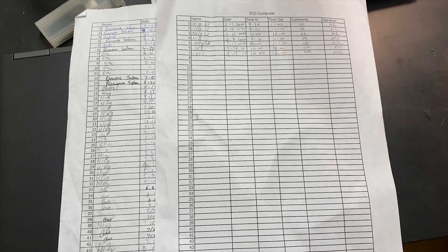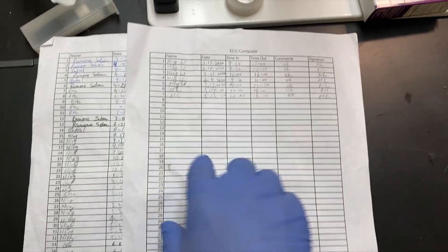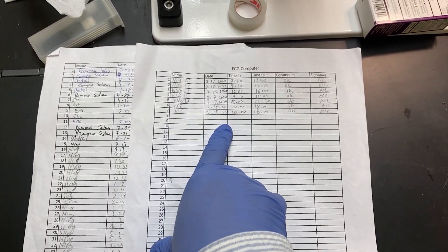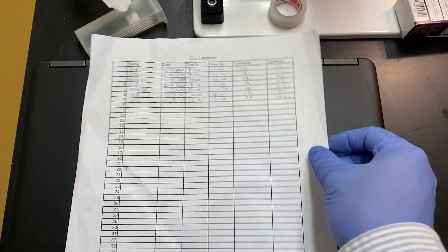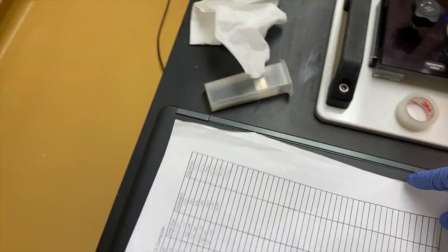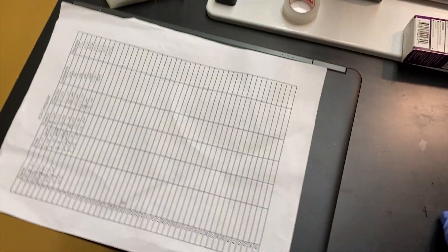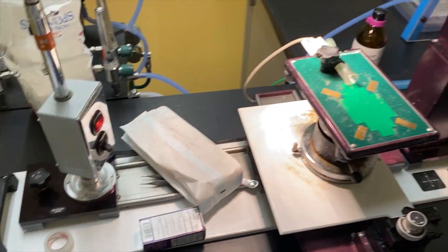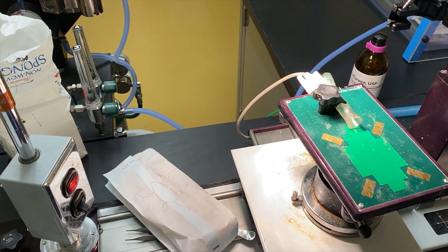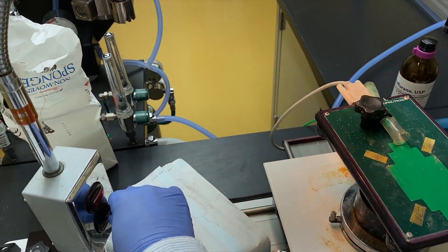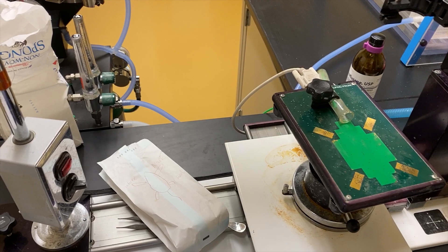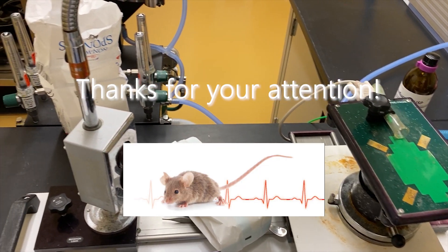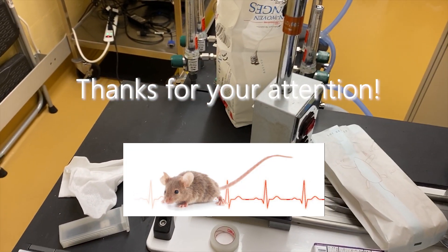Every time you finish, you must record your name and the date in the ECG computer. That's very, very important because you can find which day you did the mouse work. So be careful, every time when you have the experiment, the recording is very, very important.